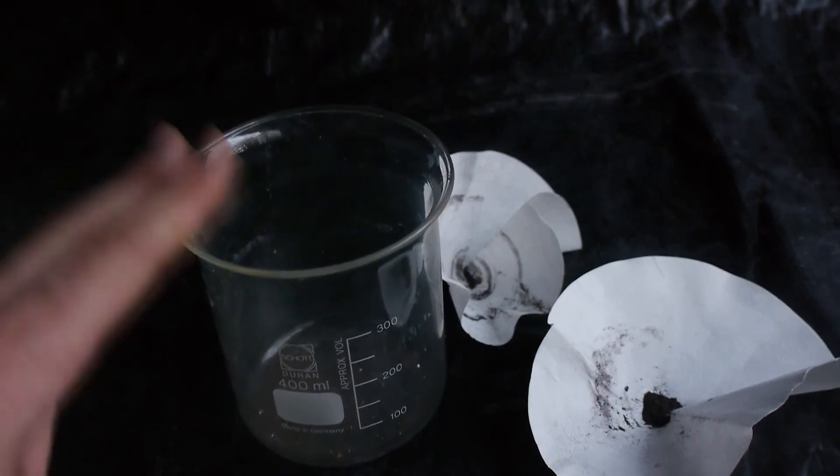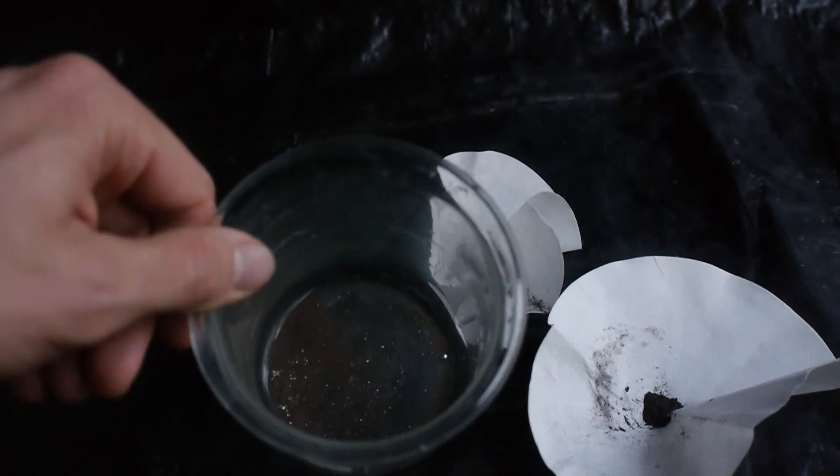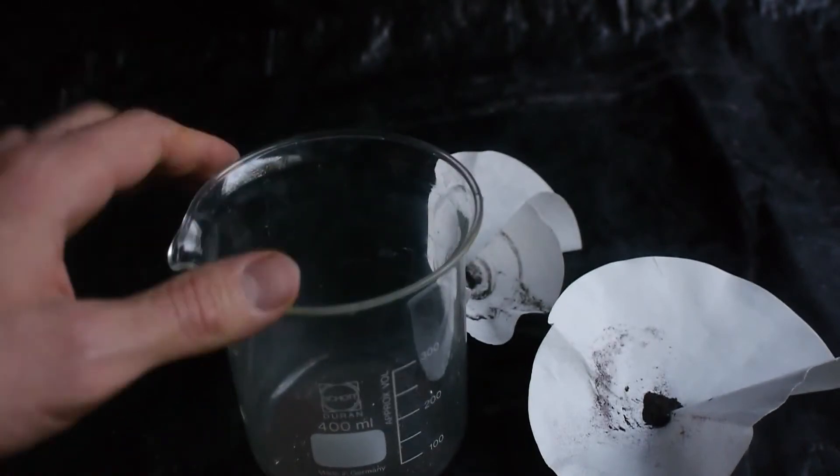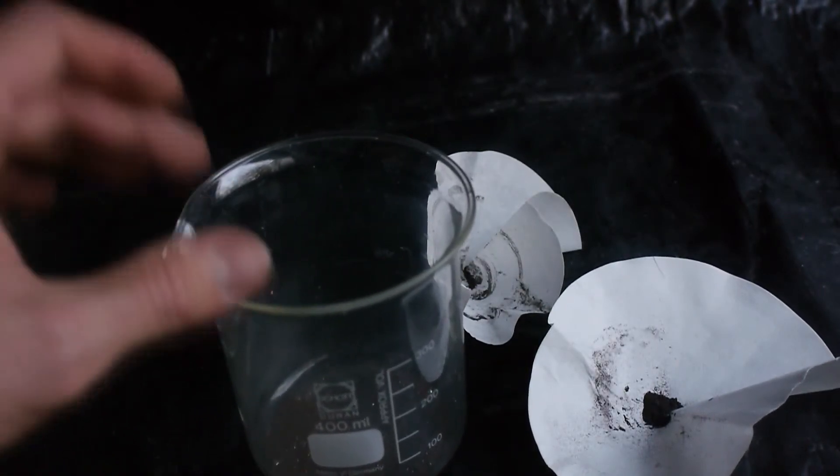Before I can heat this I need to make absolutely sure that there is no more mercury in there. And as you can see there is still some mercury in there. So I'm going to heat this under a vacuum. And distill out any remaining mercury.